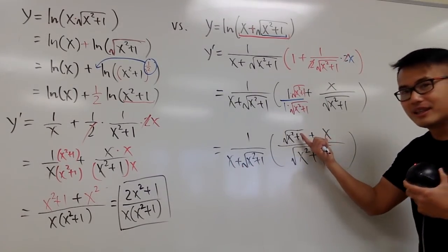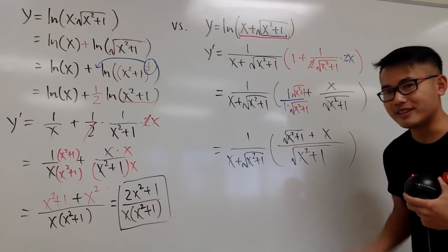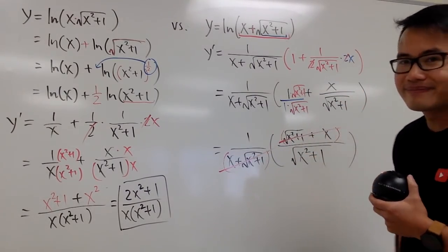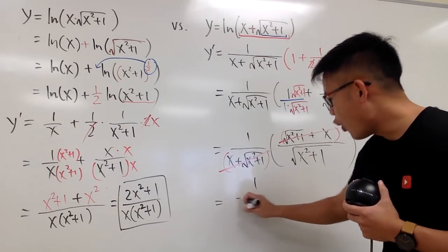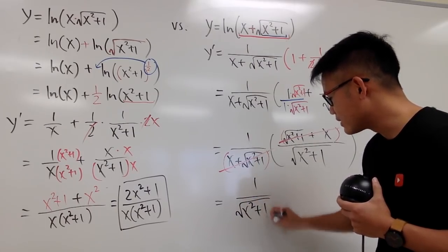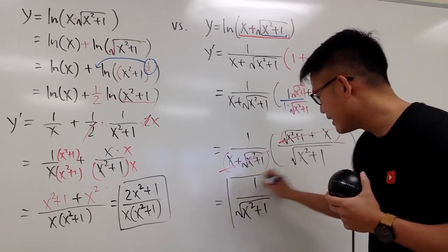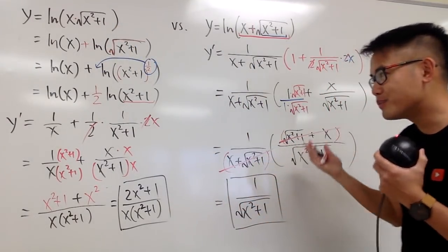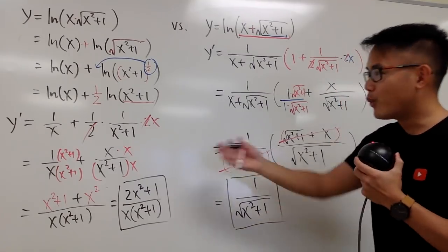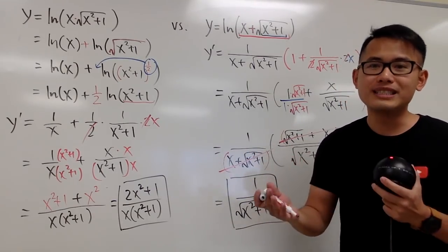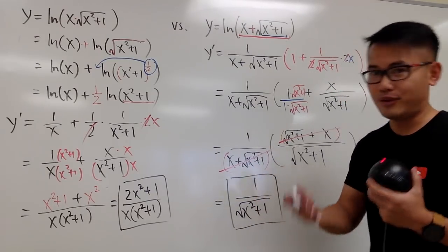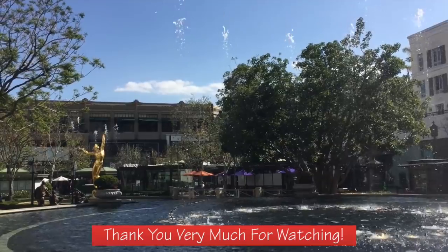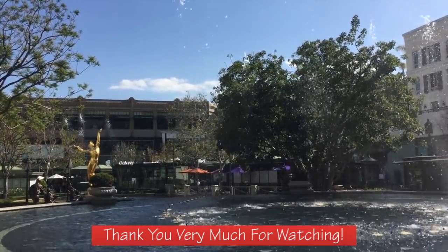That's exactly the same as x plus square root of x squared plus 1, since order in addition doesn't matter. So we can cancel this with the denominator in the original expression. In the end, we have just 1 on top over square root of x squared plus 1. That is the derivative of the second expression. As you can see, these two questions originally looked really similar, but the work is pretty different. Leave a comment below and let me know which one you like more. If you're new to my channel, please subscribe. Anyway, that's it. Thank you.